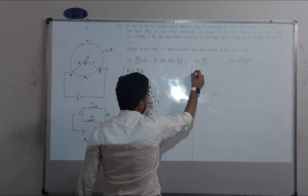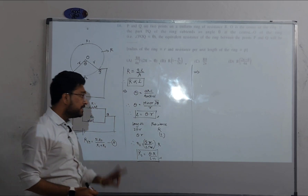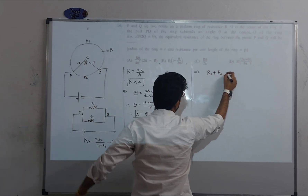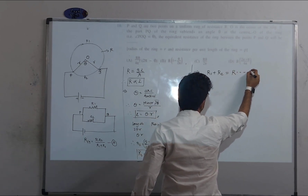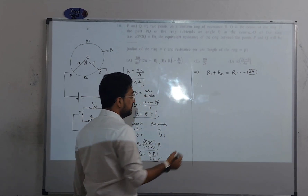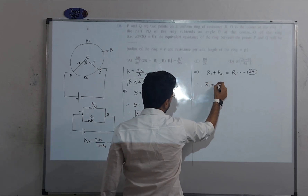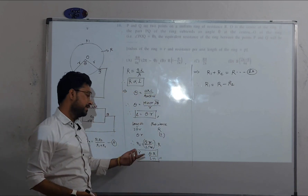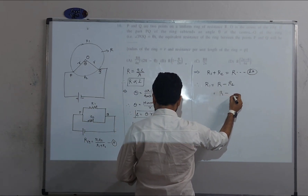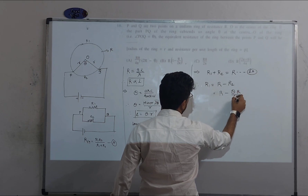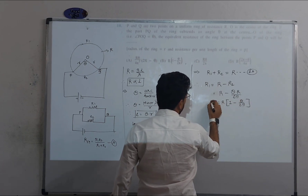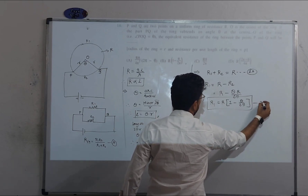Now we find R1 for the major arc. Since R1 + R2 = R (total resistance), we get R1 = R − R2 = R − θR/2π = R(1 − θ/2π), which simplifies to R1 = R(2π − θ) / 2π.